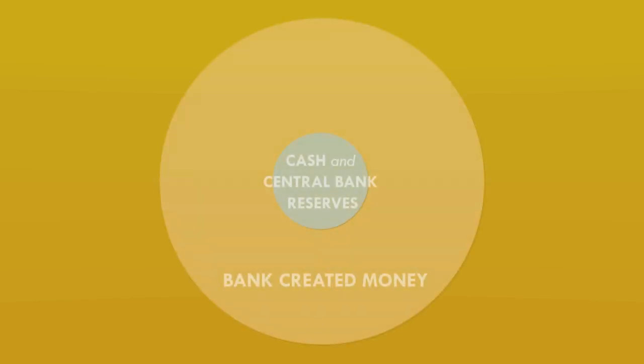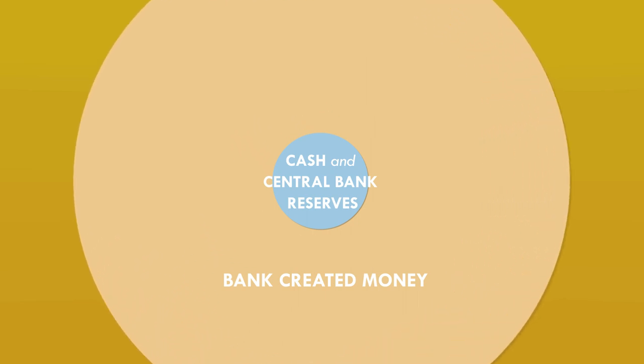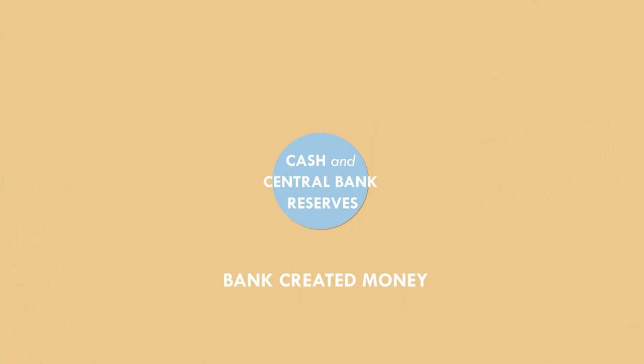Banks don't really depend on having reserves before they can create money. They can make the loan first and find the reserves to settle the payment by borrowing them from another bank. And collectively, banks can increase the money supply almost indefinitely without being restrained by the amount of central bank reserves. In fact, before the financial crisis, the ratio between the bank-created money in the hands of the public and the central bank reserves was 80 to 1.